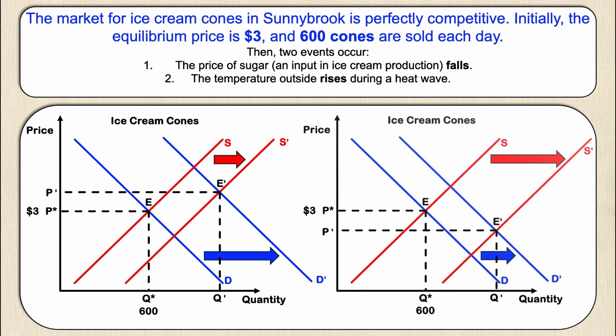The graph on the right has the same direction of shifts as the graph on the left, but now supply shifts more than demand. Looking at the quantity axis, quantity still increases — we don't know exactly how much since the question doesn't give us magnitude. But this time P* and P prime have a different relationship: the new equilibrium price is actually lower than the original equilibrium price. Both curves are shifting to the right, but the magnitude of the shift matters. If the demand curve shifts more, price goes up; if the supply curve shifts more, price goes down.